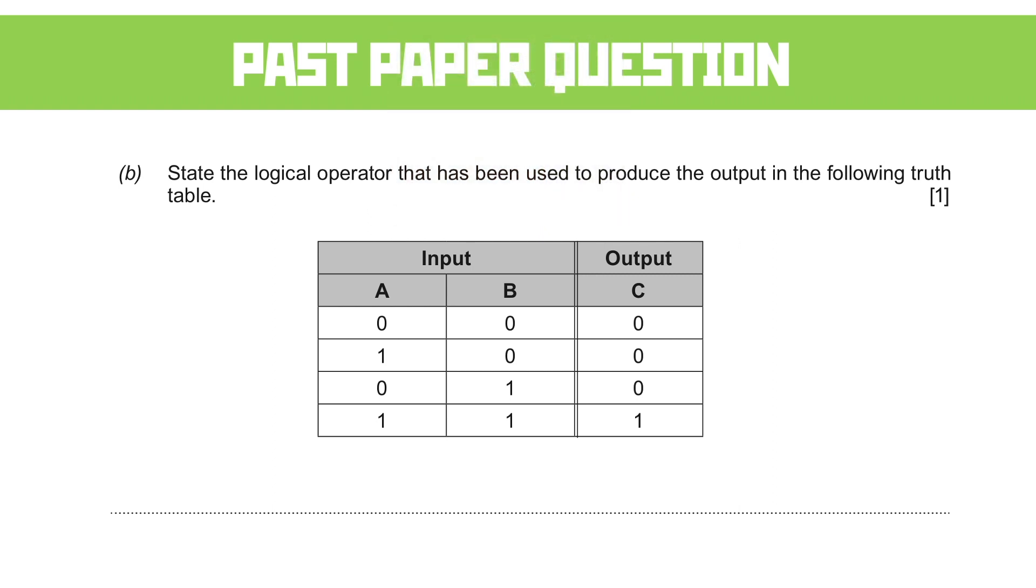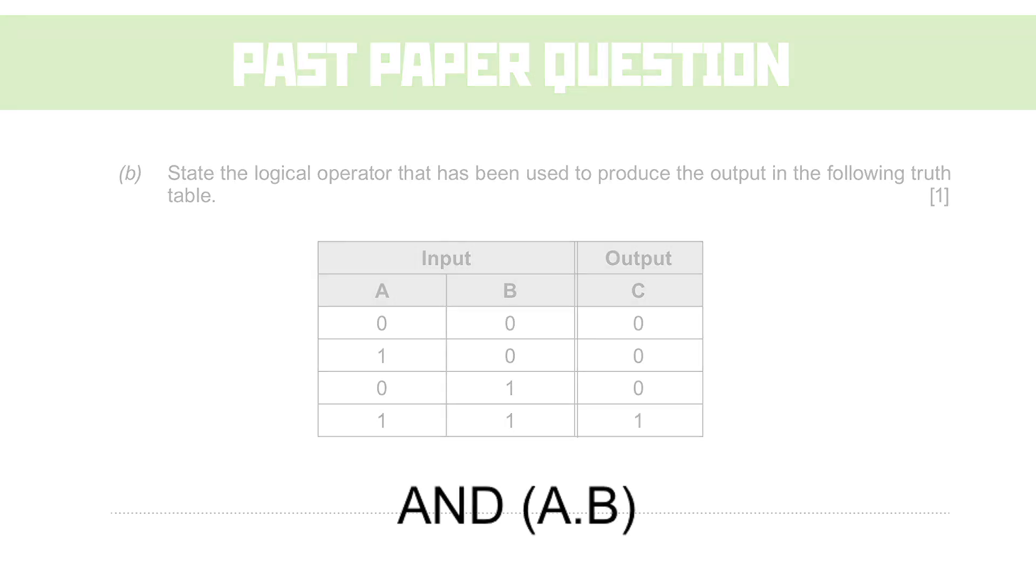This truth table only seems to give us the output one when both A and B are also one. So which of our logical operators gives an output in that circumstance? If you said AND, then you'd be right. And once again, you'll see that they accept the written name of the operator or the expression, but not just a dot on its own.